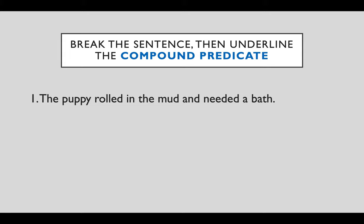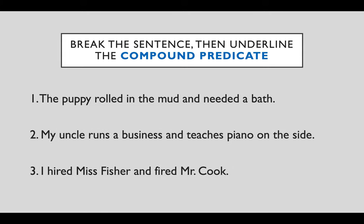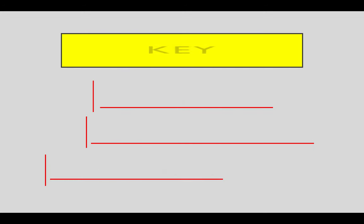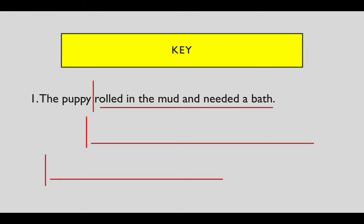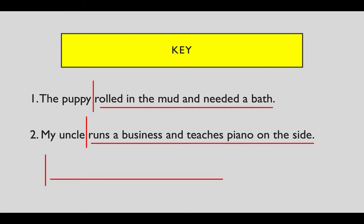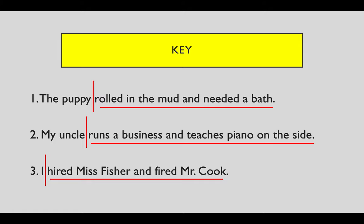Here is the exercise — you may pause the video to find the answers. Answer key: number one, the puppy is the subject; rolled in the mud and needed a bath is the complete predicate. Number two, my uncle is the subject; runs a business and teaches piano on the side is the complete predicate. Number three, I is the subject; hired Miss Fisher and fired Mr. Cook is the complete predicate.